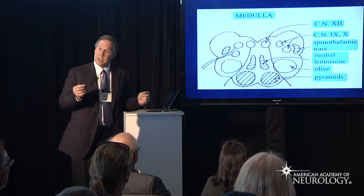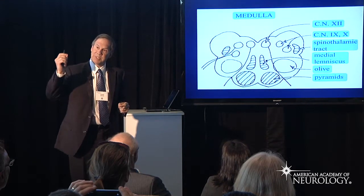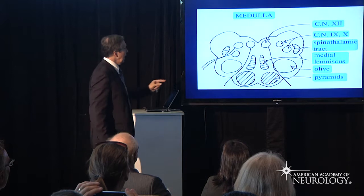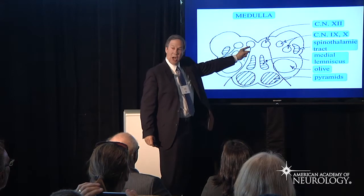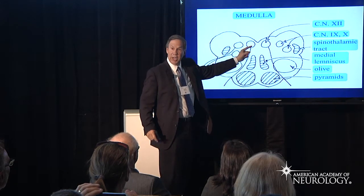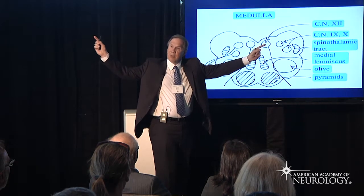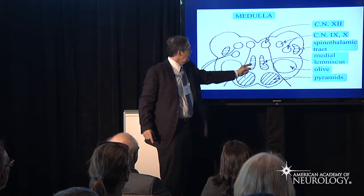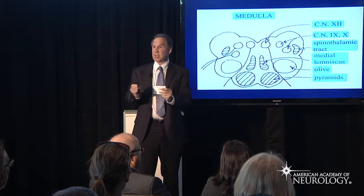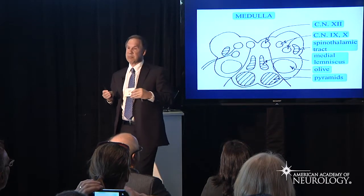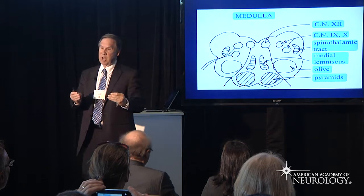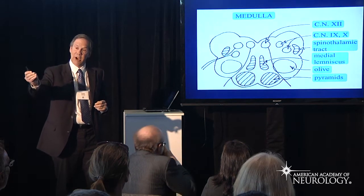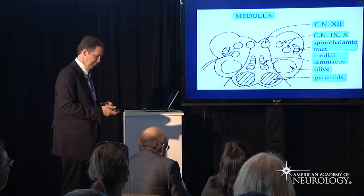When we get to the medulla, the paradigm stays the same. CN12 lies in the midline, while CN9 and CN10 are more lateral. The medial lemniscus is still in the center, carrying position and vibratory sense, and the pyramids carry motor information.